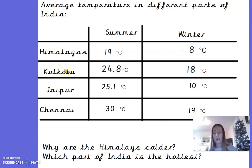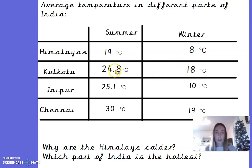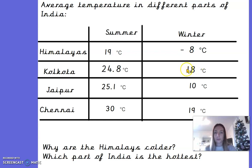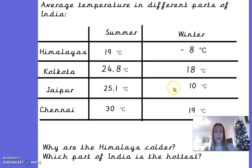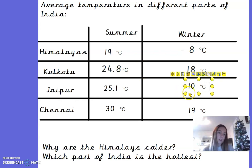Moving on to Kolkata — in summer it's a little warmer at around 24.8 degrees, like a nice hot summer's day here in the UK. In winter the temperature goes down to around 18 degrees, which is still quite warm — we'd wear shorts and a t-shirt at 18 degrees here. In Jaipur it's a little warmer in summer at around 25.1 degrees, but in winter it drops more to around 10 degrees, similar to what we experience in October or November.